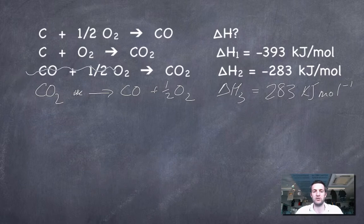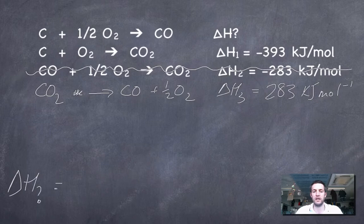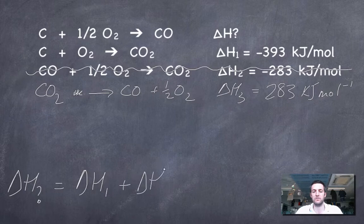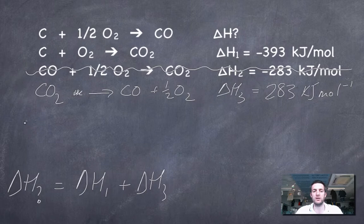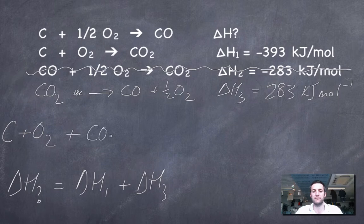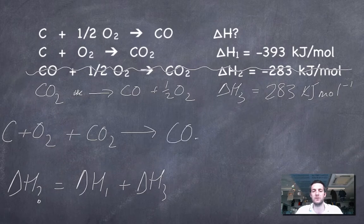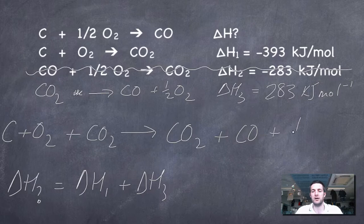Let's cross this equation out because we're not going to use it, and let's add together delta H1 and delta H3 and see what happens if we do that. We'll end up with an equation that has C plus O2 from this equation here, plus the CO2 from this equation. That's everything on the left hand side of the arrow, so now let's go over to the right hand side: we've got CO2 plus CO plus a half O2.